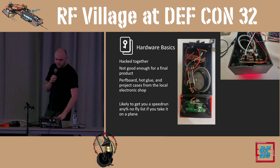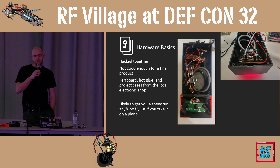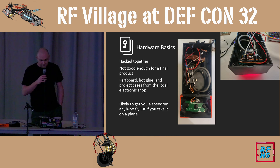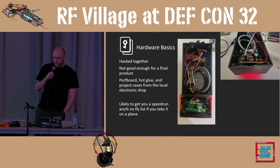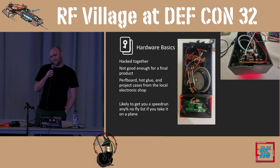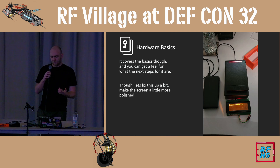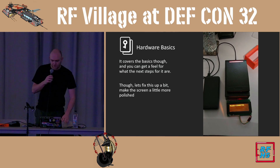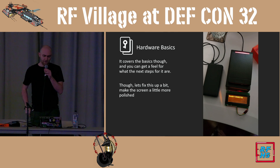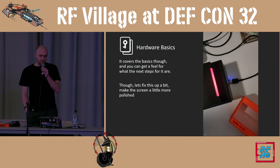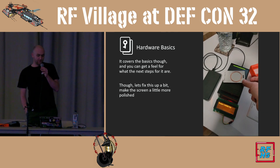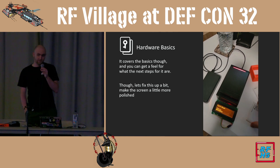This is what I call the speedrun any percent to get on a no-fly list. This is what my first prototype looked like — just a bunch of perf boards, whacking everything together. Yeah, it's good enough. I've got a screen, I've got everything in there. I got the reader to work and read data off of it. Enough to say we got the basics. When I say it worked, I mean you could whack a card on there and get the data off it. Any percent to the no-fly list if you try and take this on a plane — do not do that.